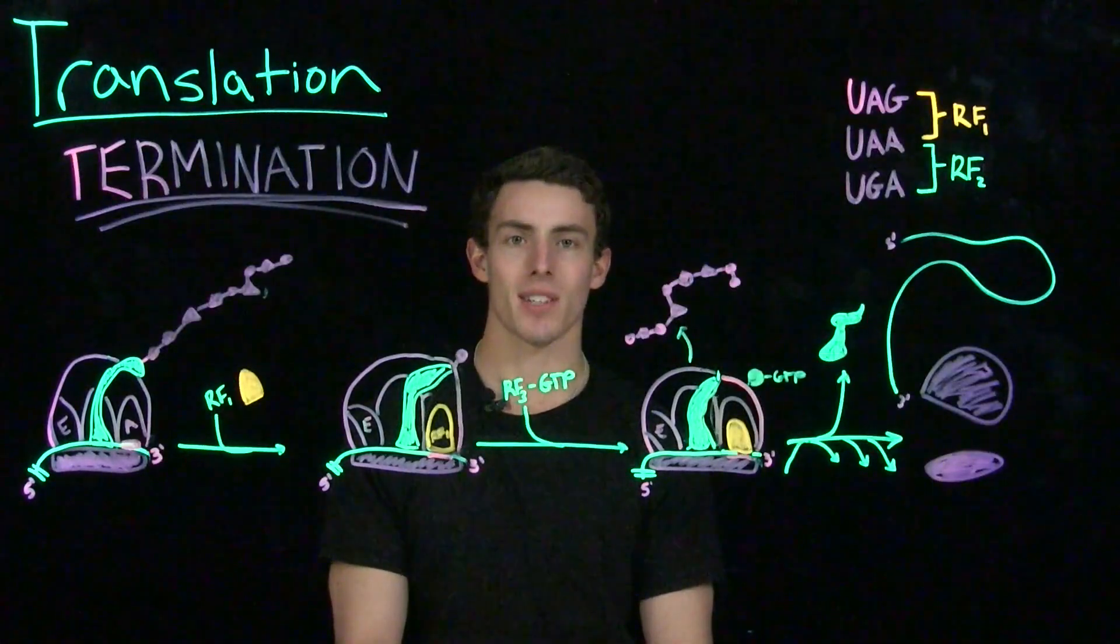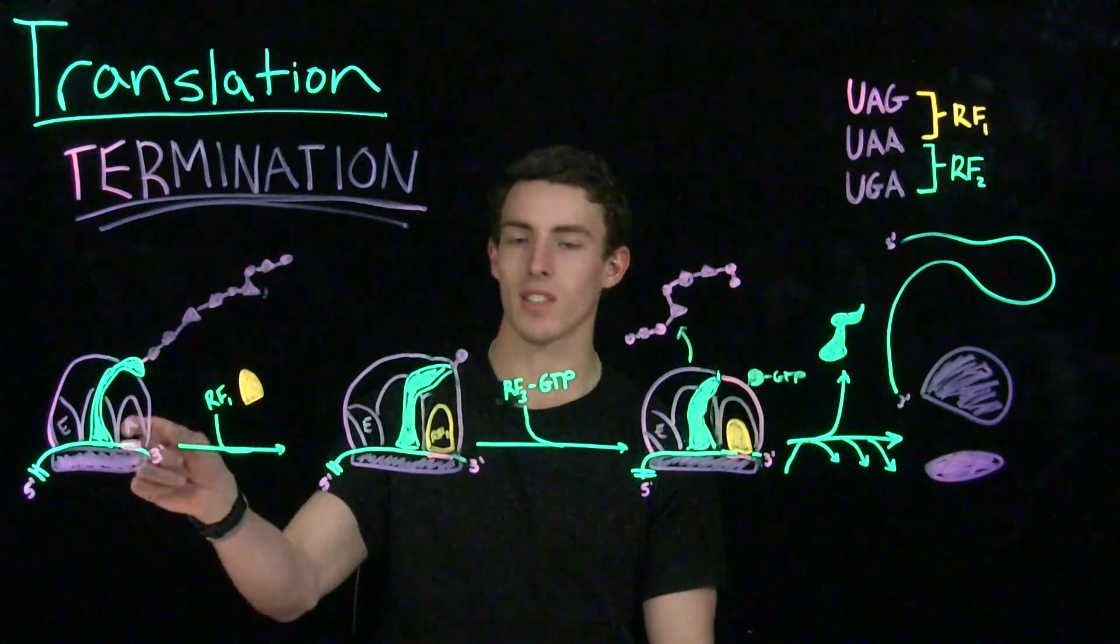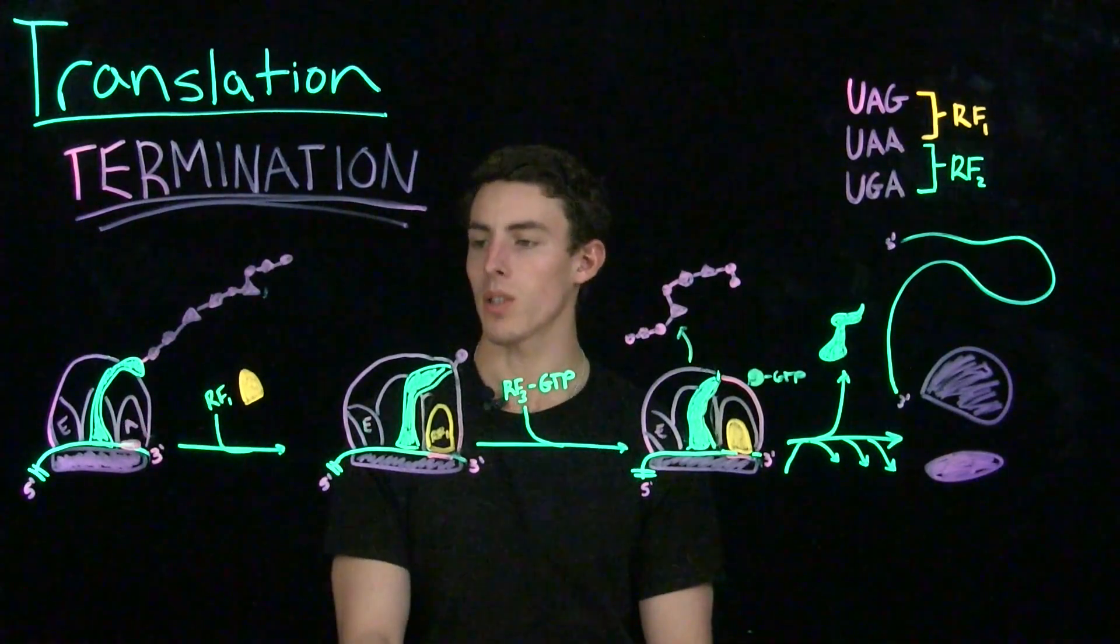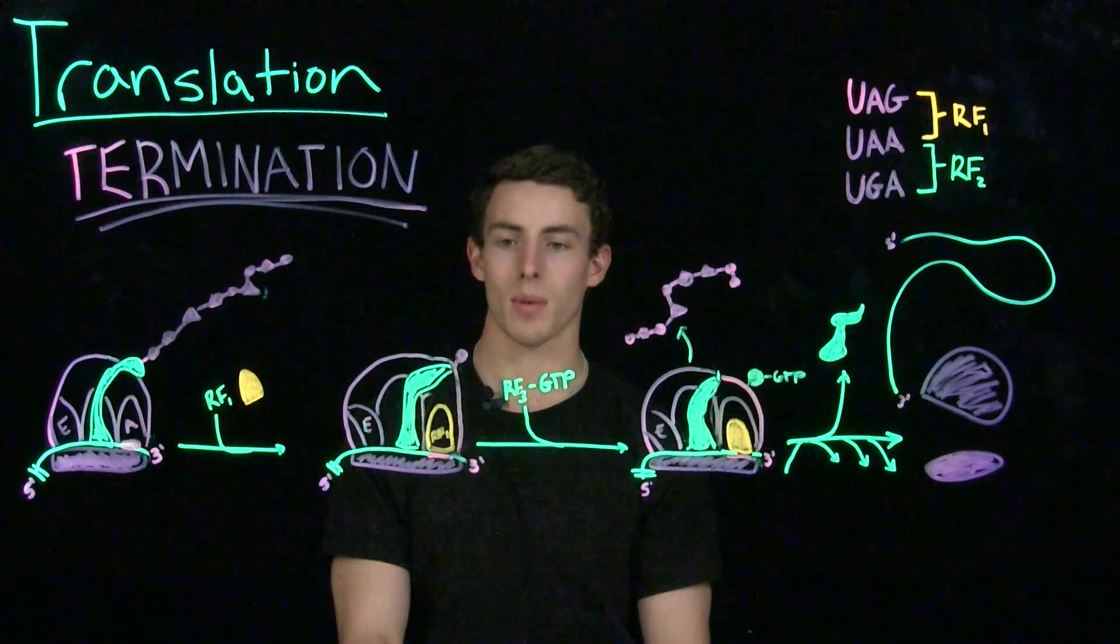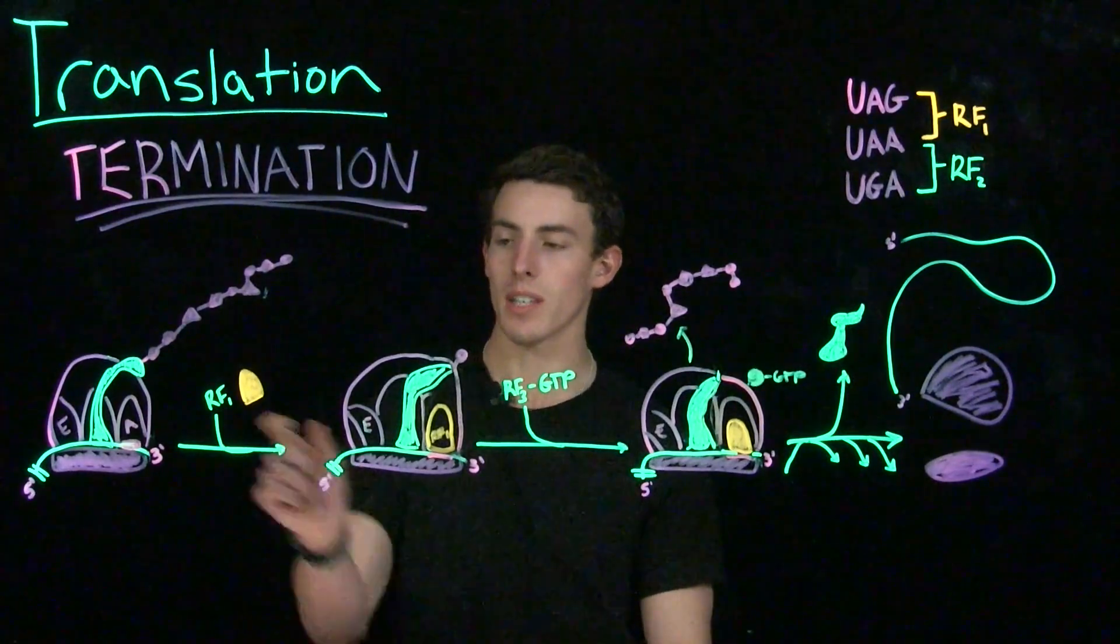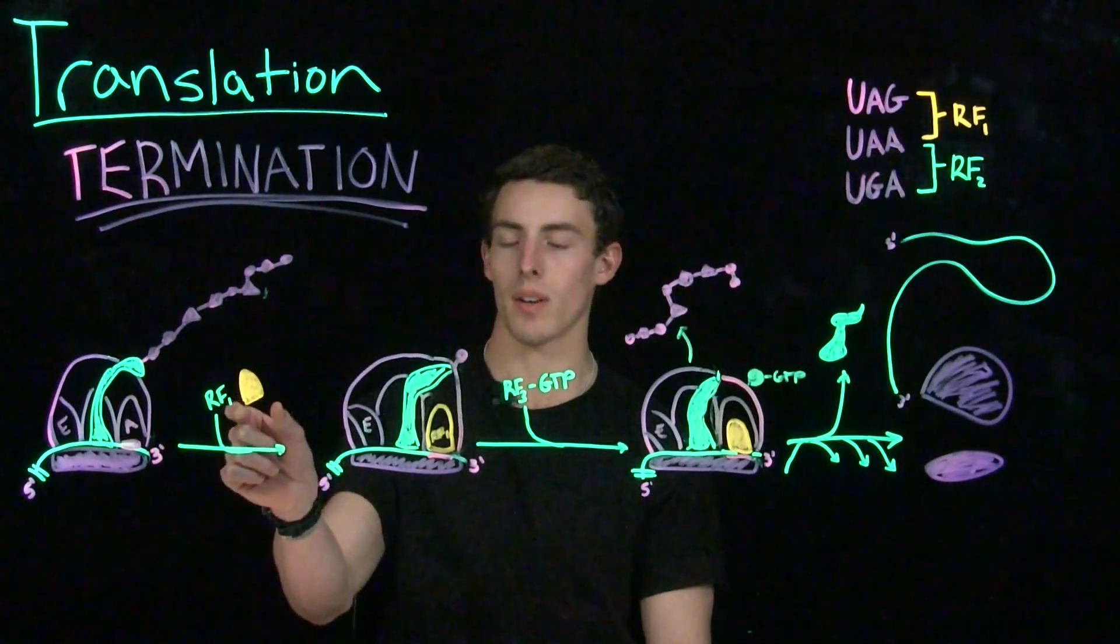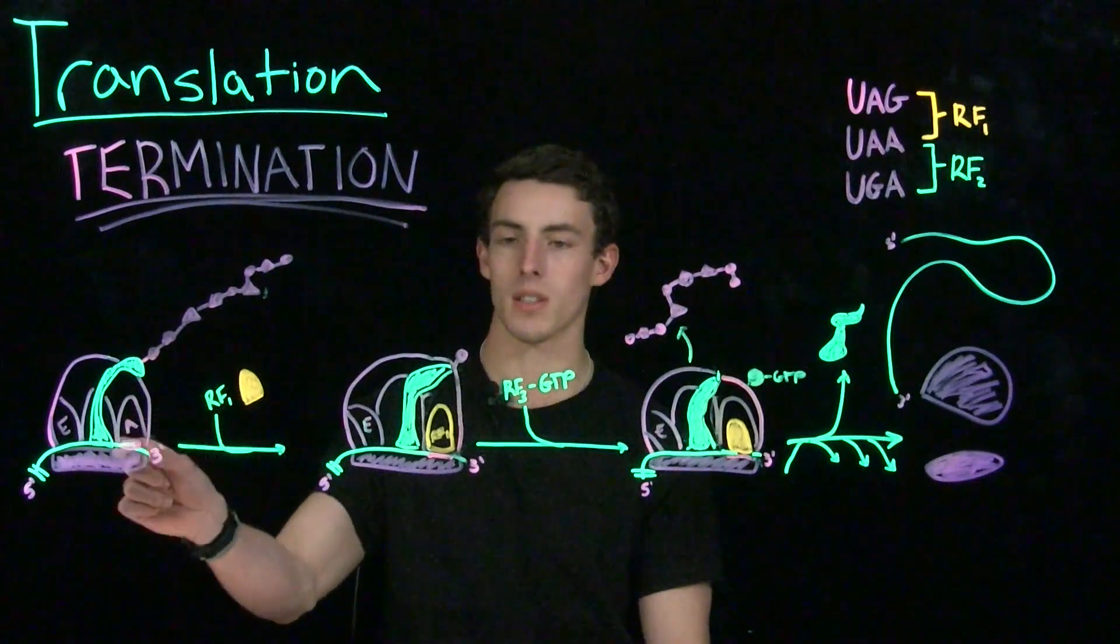Now, let's take a look at termination. Recall that termination is when we reach a nonsense codon. So when we reach a nonsense codon, we're going to have something recruited called a release factor. And a release factor is going to have an anticodon that's going to correspond to one of these nonsense codons.